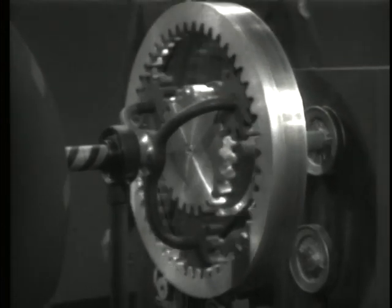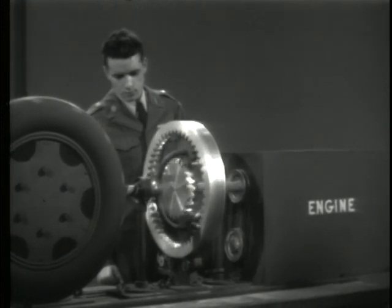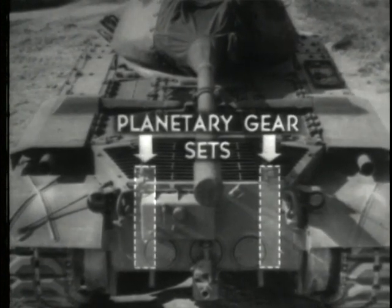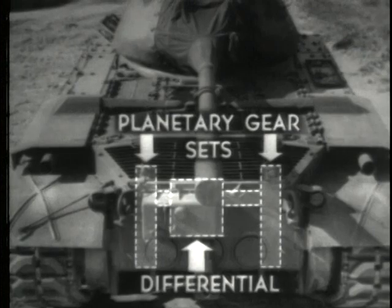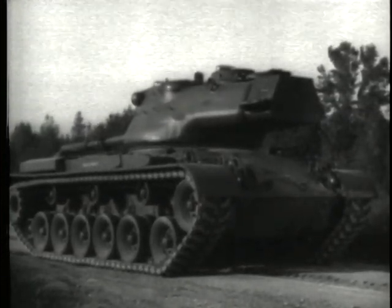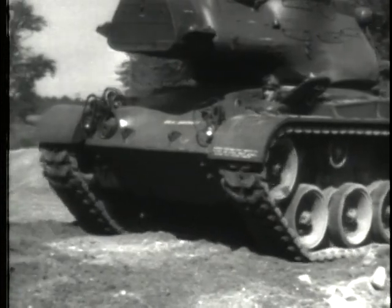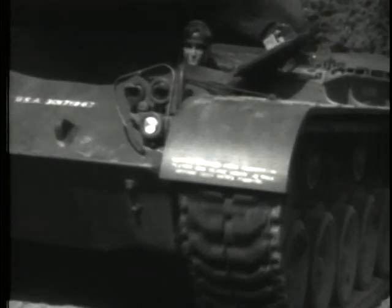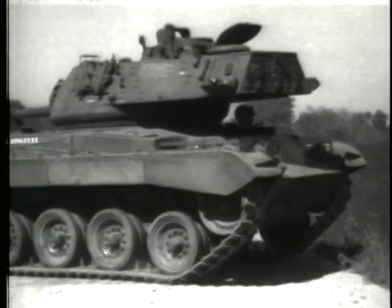We can see that giving planetary gear sets two inputs instead of one widens their possibilities, making them especially useful in driving tanks. For instance, this tank uses the two-input principle on its two planetary gear sets, one for each track. A mechanism called the differential controls the speeds of the second inputs and facilitates steering by transferring power from one track to the other. In this way, the steering differential permits one output to be speeded up while the output on the other track is retarded. We can even make the tracks go in opposite directions and give us a pivot turn, like this tank about-facing in its own length.